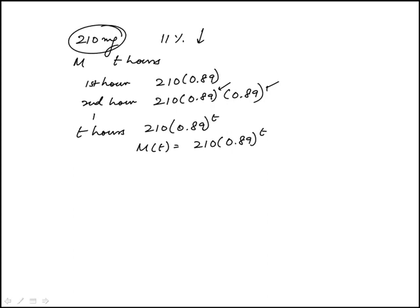The second one they're asking, according to this model, how many milligrams of the medicine present in the body five hours after the medicine is taken? And so we replace T with 5, and we compute this with the calculator.